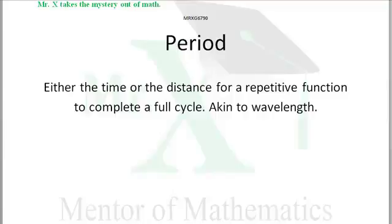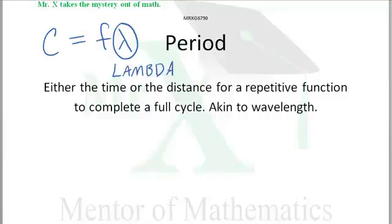We call it C. So C equals F lambda. C, the speed of light, equals the frequency times the wavelength. This funny looking symbol is called a lambda—Greek letter lambda. We use it for wavelength.